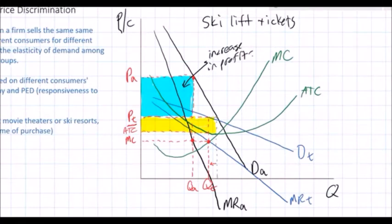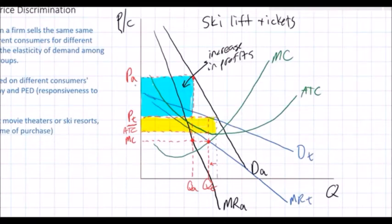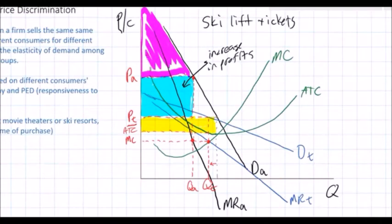The increase in profits comes at the expense of adults who pay a higher price. However, adults are willing and able to pay a higher price. If they had paid a lower price of PT, consumer surplus would have been considerably larger. The resort may have chosen to charge a single price of PA — not PT — so far more teenagers are willing and able to buy lift tickets at PT. At price PA it's actually above the teenagers' demand curve, so no teenagers would buy lift tickets at all.